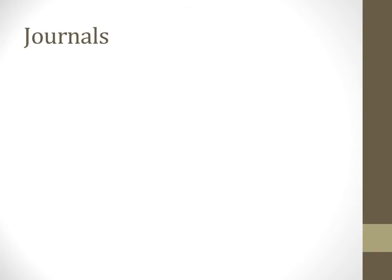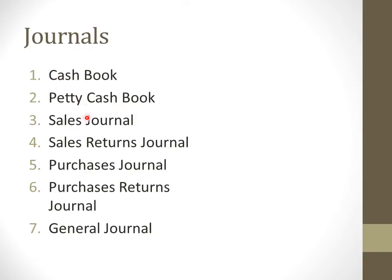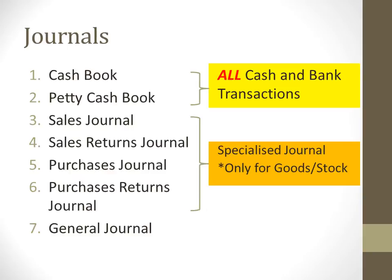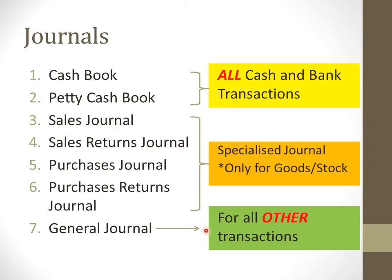There are seven journals. The seven journals are: cash book, petty cash book, sales journal, sales returns journal, purchases journal, purchases returns journal, as well as general journal. All cash and bank transactions are recorded in the cash book and petty cash book. The specialized journals — sales journal, sales returns journal, purchases returns journal, and purchases journal — are solely used for goods and stock. For instance, if you buy fixed assets, you don't put it under purchases journal, which is a common mistake. The general journal is for all other transactions that don't go under any of the first six.